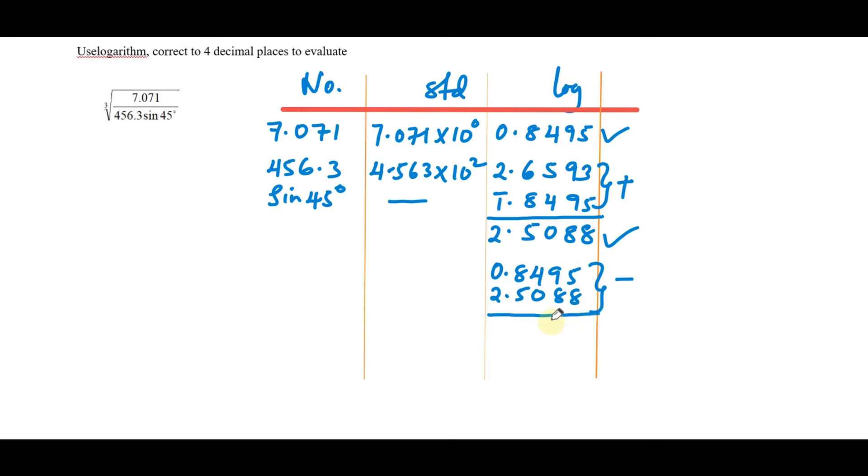Subtracting these gives bar 2.3407. One more thing remaining is to get the cube root. When getting the cube root, we divide by 3. So let me do this one separately. We have bar 2.3407 and we are dividing this by 3.